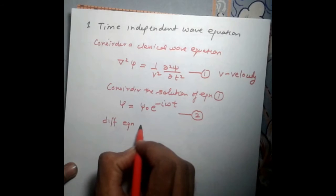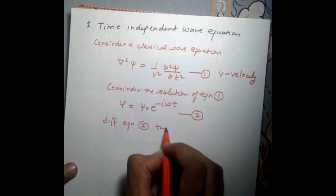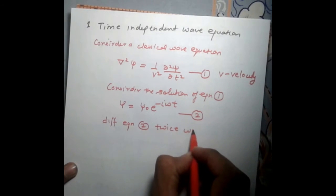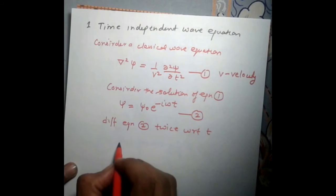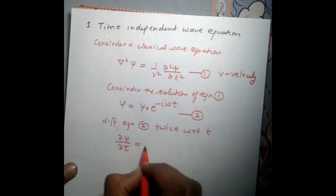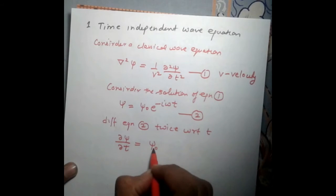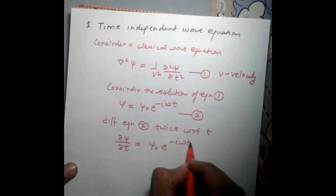Differentiating equation two twice with respect to t: the first derivative gives ∂ψ/∂t = ψ₀ e^(−iωt) · (−iω).